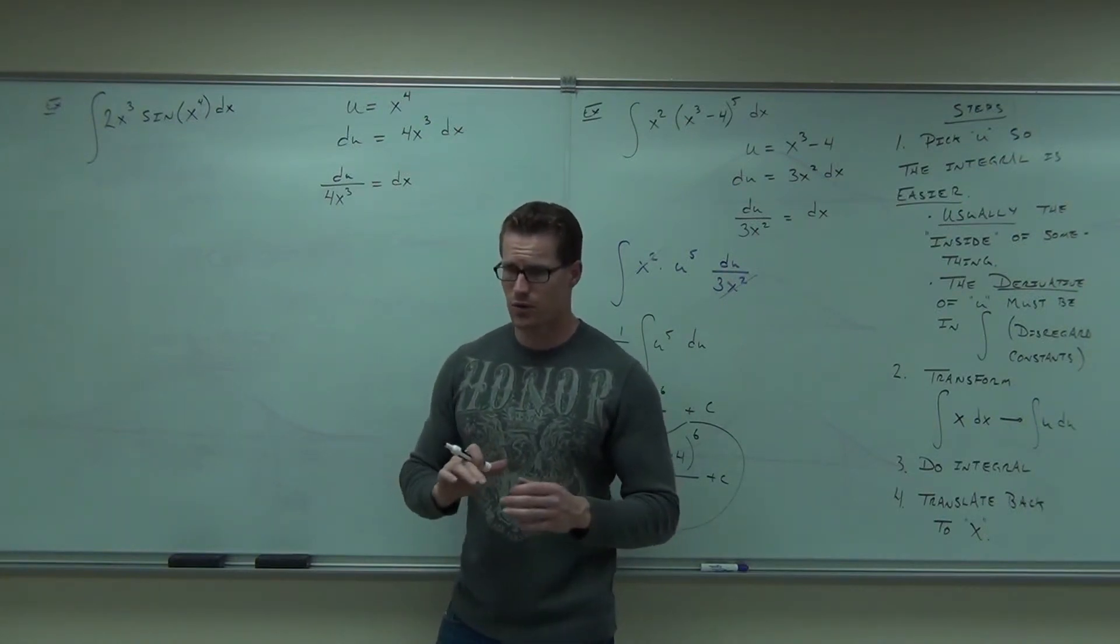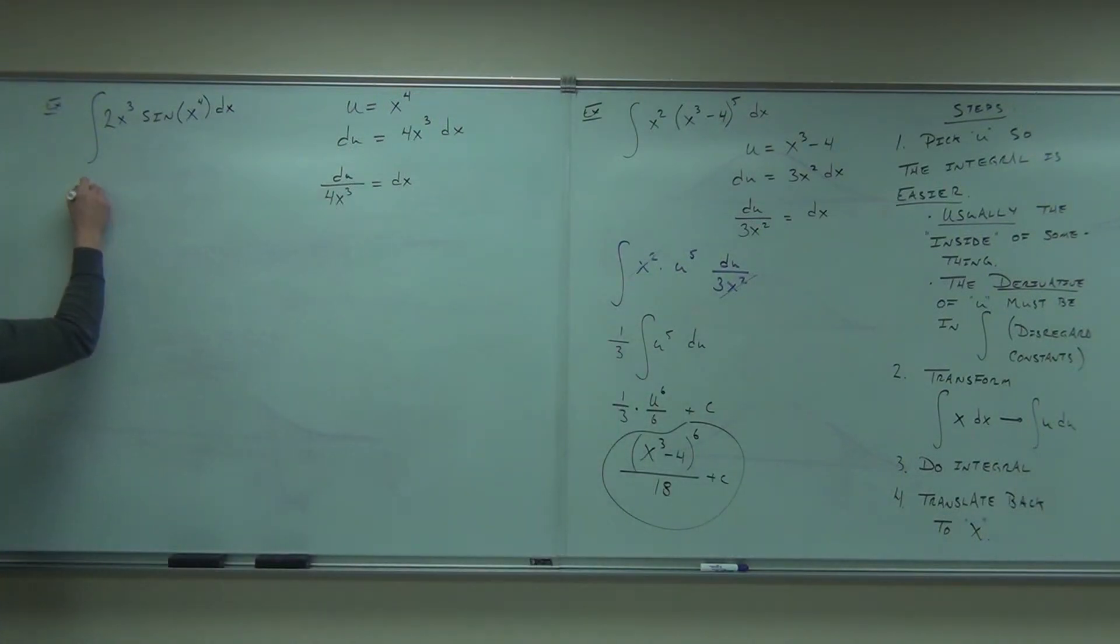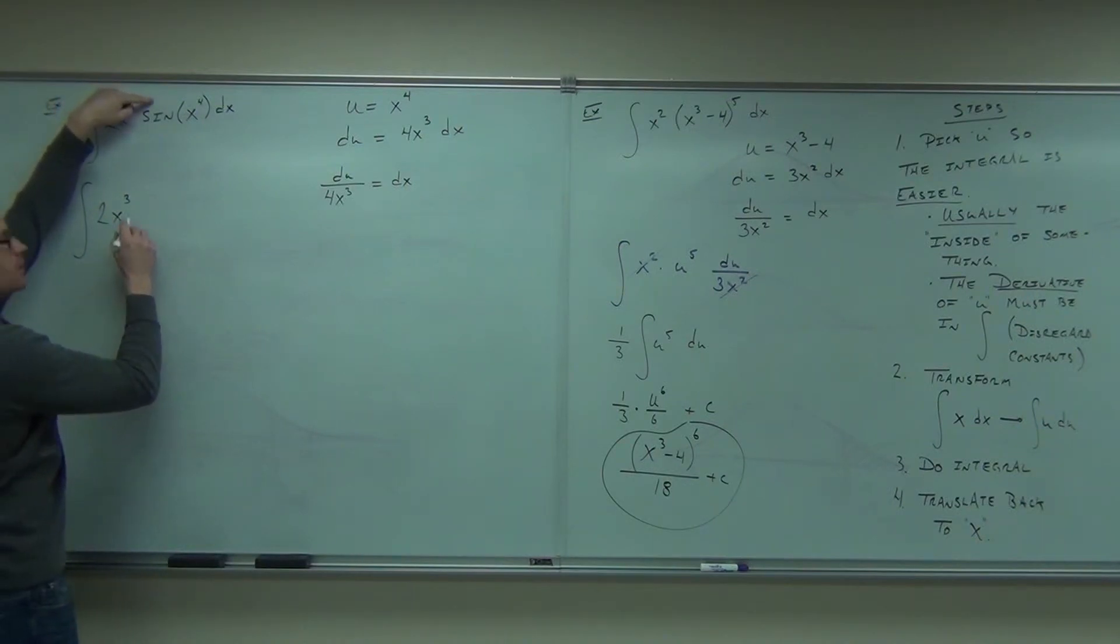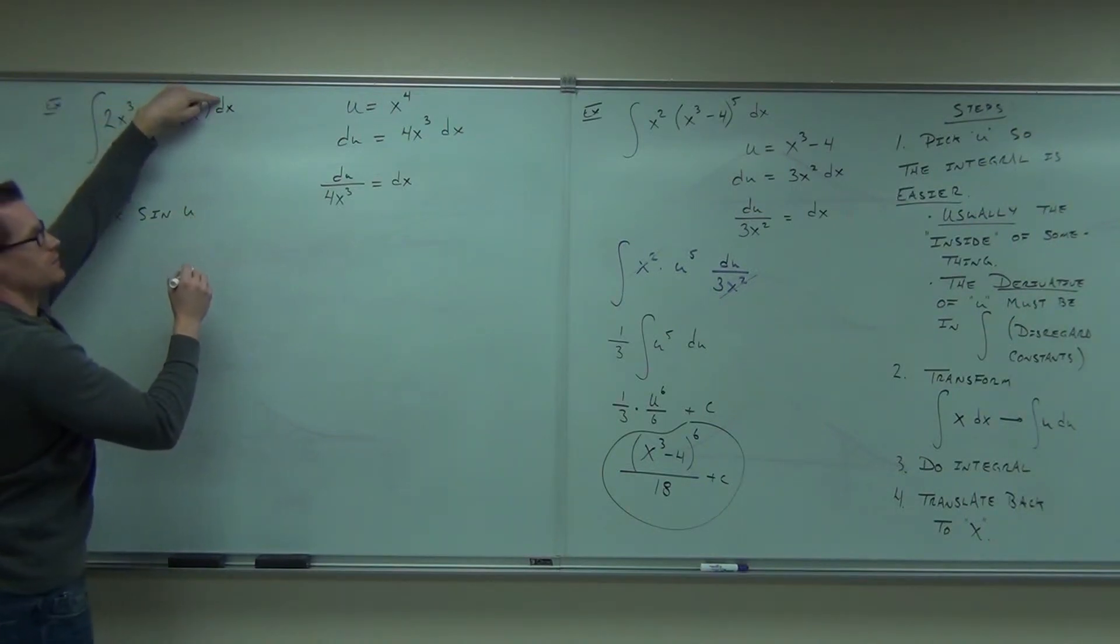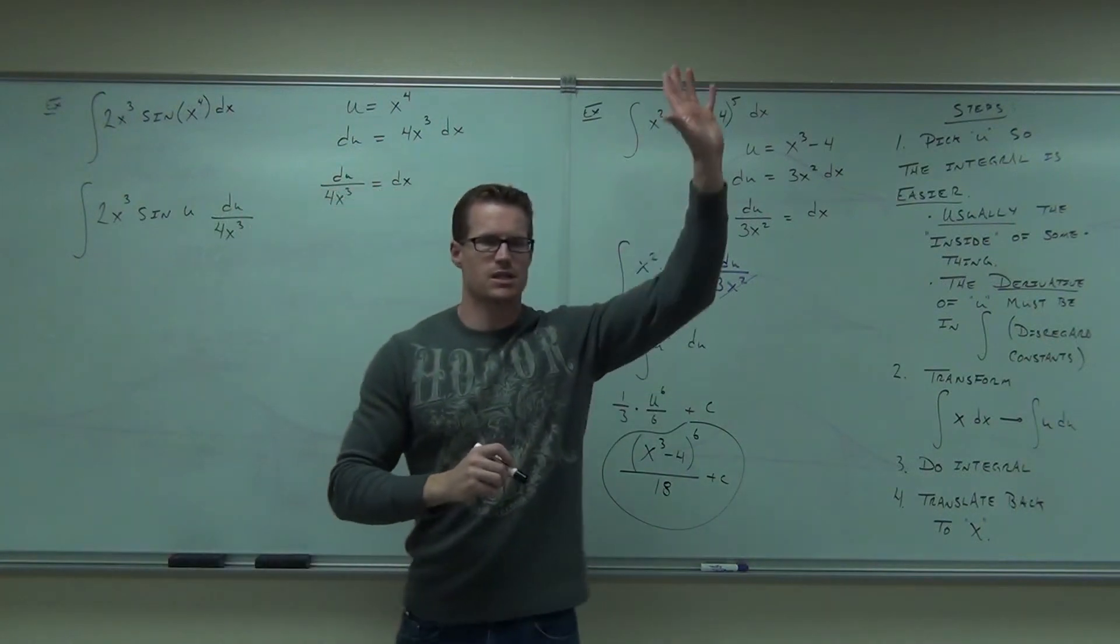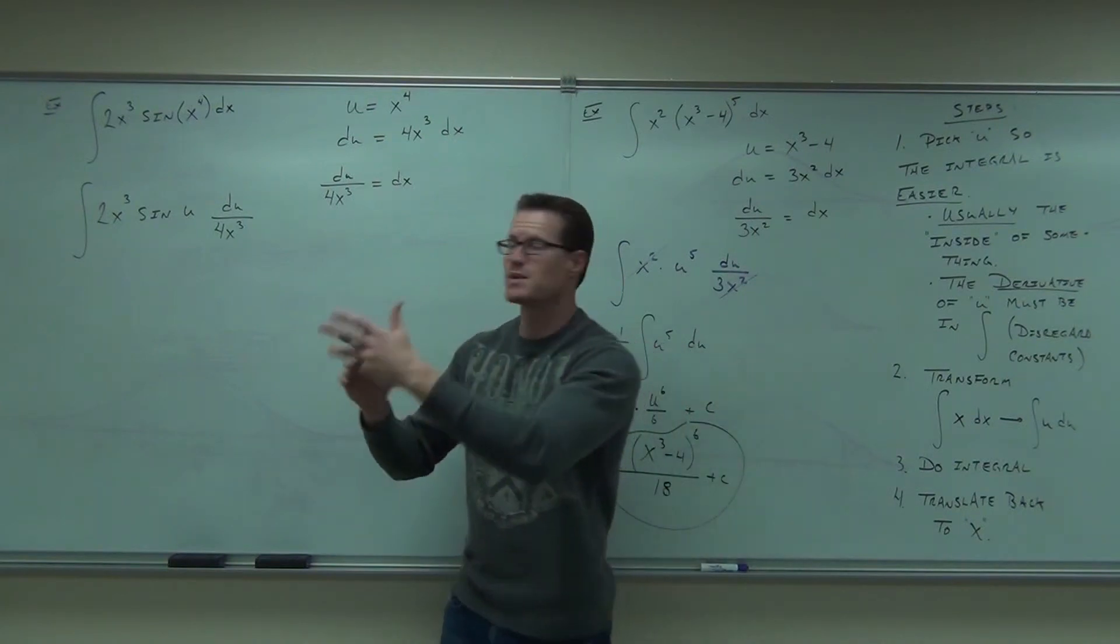Now you substitute for whatever you've picked. The only things you substitute for are your u and your dx. Everything else stays there until you cross it out. So let me ask you this question. Does the 2x cubed stay there? Does the sine stay there? Does the x to the fourth stay there? What does that become? That's your u. Very good. Does your dx stay there? How much is your dx equal to? Show of hands. How do people feel okay with this example? So, trig function, yes. Hard? Not really. Pick a u. It becomes easier. Why does it become easier? What happens now?